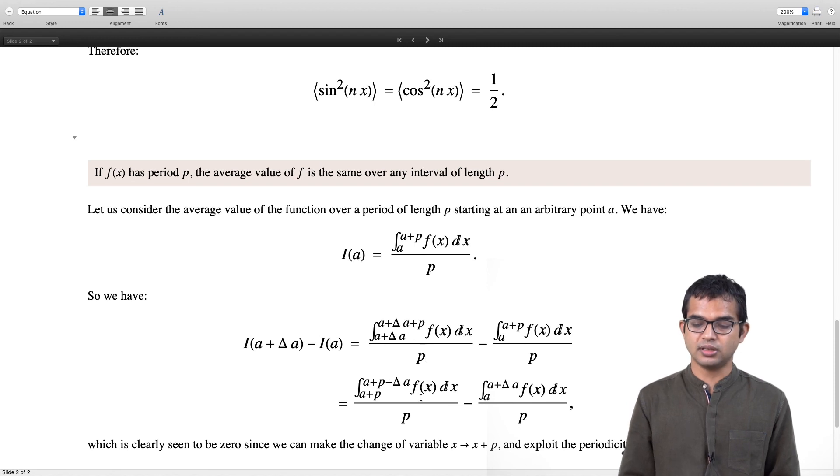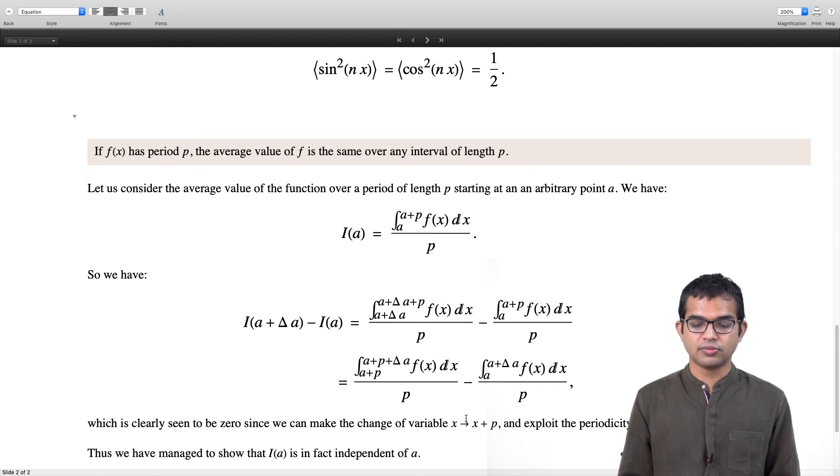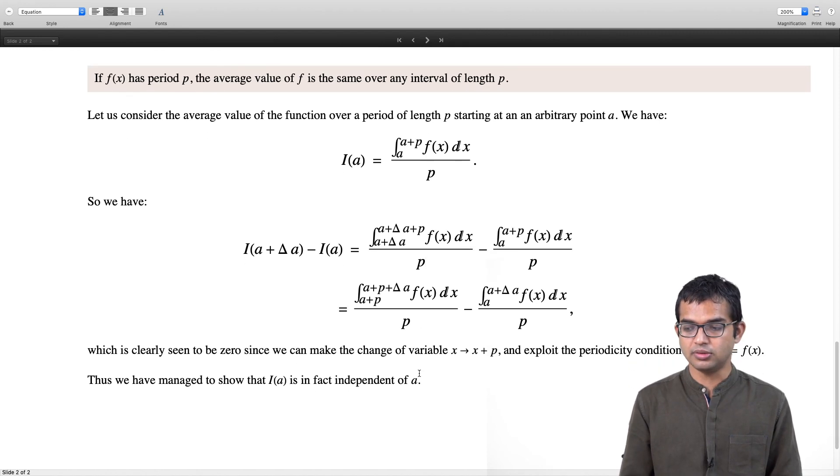Then you will immediately see that if you invoke the periodicity of this function f(x + p) = f(x), therefore both these integrals are the same and the denominator p is the same in both. Therefore the difference of this will be 0. Therefore we have managed to show that I(a + Δa) = I(a). Therefore I(a) is actually independent of a—you could have started at any point, as long as you cover a length p which is the period of this function, you are going to get the same average value.